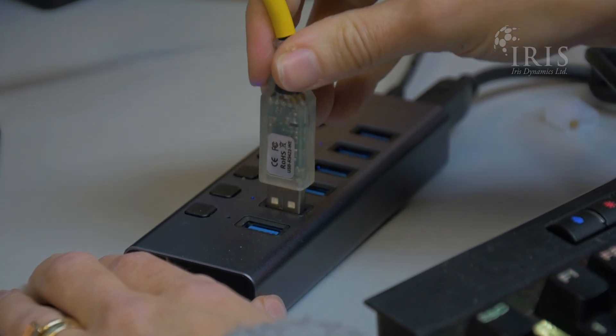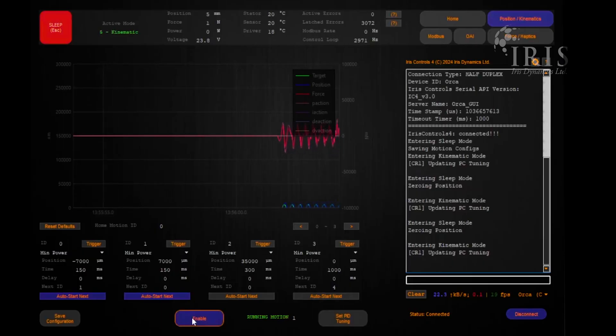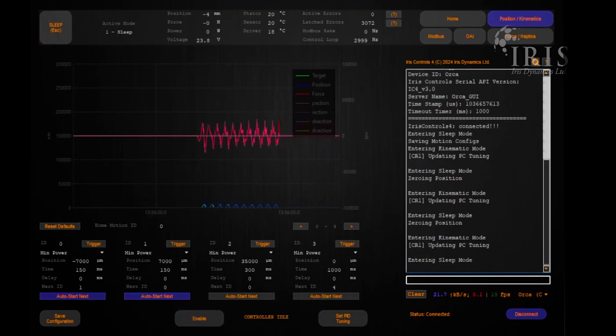Orca Series motors are easily configured over USB using Iris Controls, available for free at irisdynamics.com. Define the behavior of IO Smart Hub signals and more using this intuitive interface.